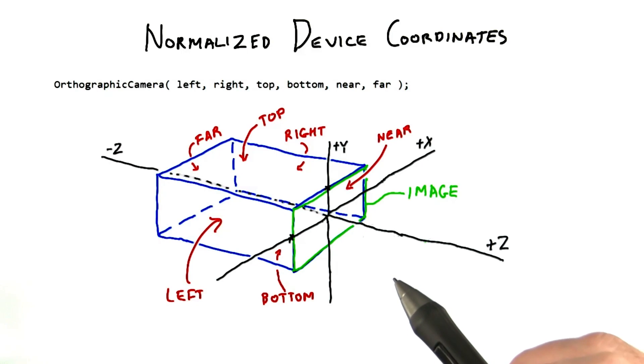With the view transform in place, we now have all our coordinates in the camera's frame of reference. What we now want to do is define a box in this space to contain everything we're going to render. It's sort of like defining the size of a stage.